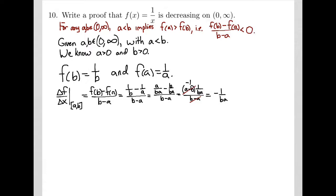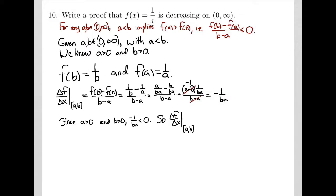Since a and b are both positive, negative 1 over ab must be negative. So our slope is negative, and that's what it means to be decreasing. We reach our conclusion, and that finishes our proof.